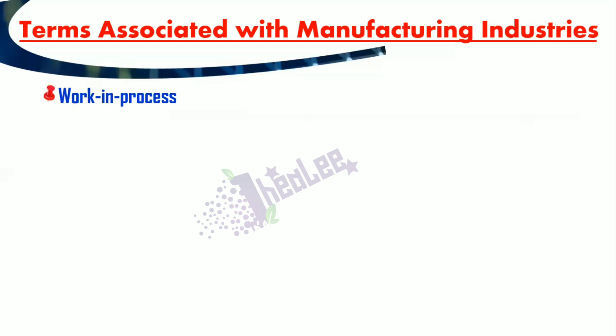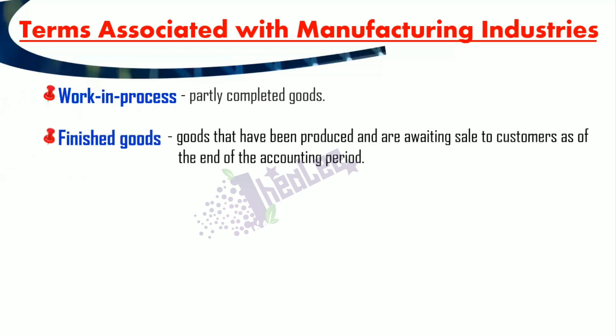We have what we call work in process, otherwise called work in progress — these are partly completed goods that were started but are not completed. Our next term is finished goods — these are goods that have been produced and are awaiting sale to customers as of the end of the accounting period.